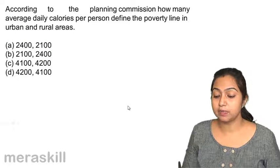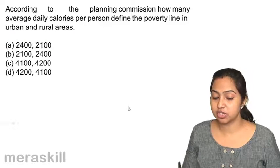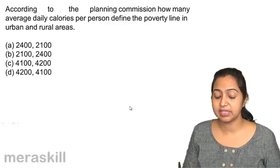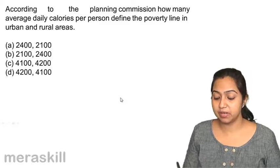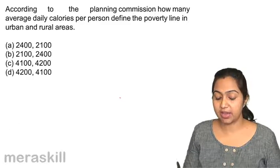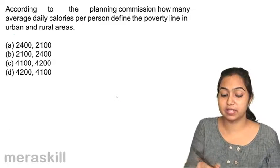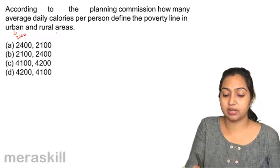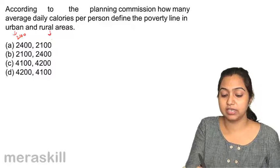According to the Planning Commission, how much average daily calories per person define the poverty line in urban and rural areas? The figure is: in urban areas it is 2100 calories, and in rural areas it is 2400 calories.